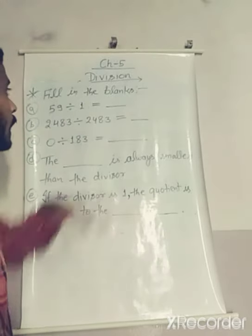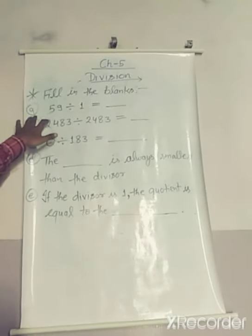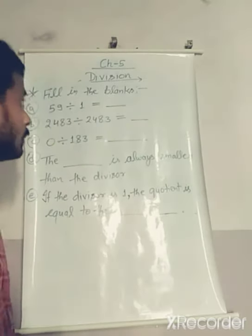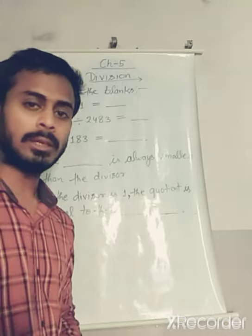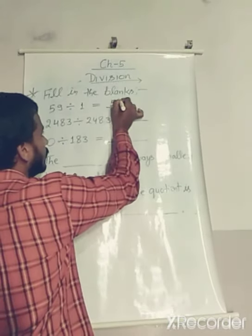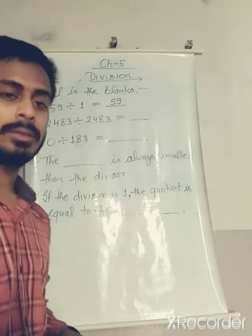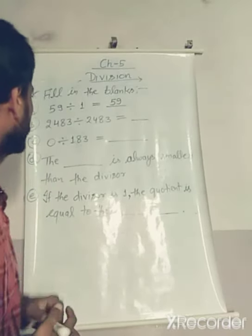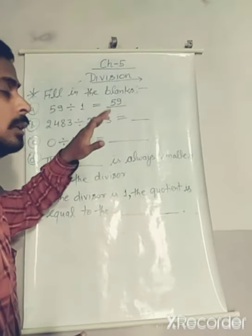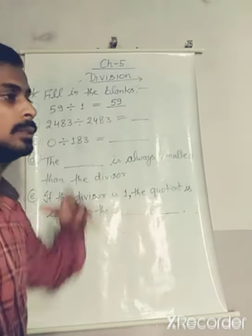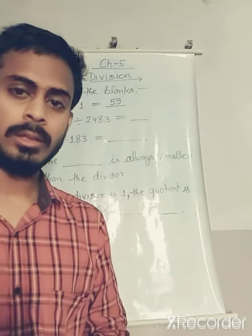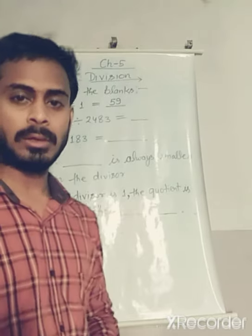Fill in the blanks. First: 59 divided by 1. When we divide a number by 1, we get the same number — so the answer is 59. This is one property of division. For example, 1 lakh divided by 1 is 1 lakh; 243 divided by 1 is 243; 3 crore divided by 1 is 3 crore.